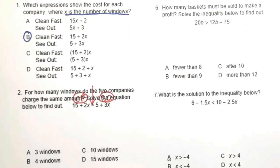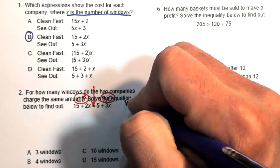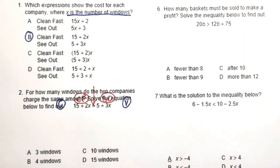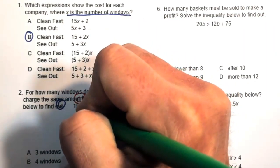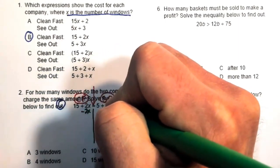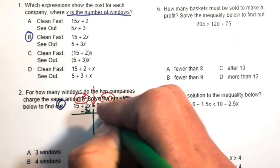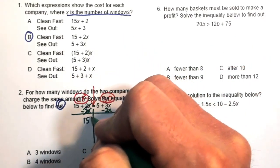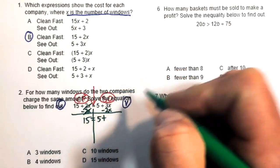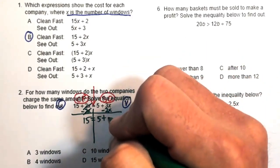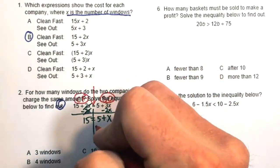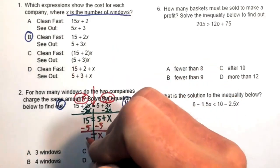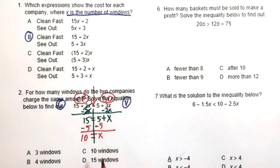It's good to pick a side for variables and constants. I'll choose variables on the right side and constants on the left. I'll subtract 2x from both sides — 2x minus 2x cancels to 0, leaving 15 equals 5 plus x. Then subtract 5 from both sides, giving x equals 10.